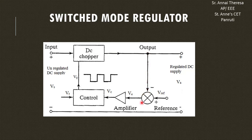This is the comparator. The output voltage — the output of the DC chopper — is compared with the reference voltage. This compared voltage is given to the amplifier, which amplifies it and passes it to the control circuit. In the control circuit, this amplified signal is compared with the reference signal, which is the sawtooth signal. The sawtooth waveform and the amplified signal are both compared, and the gate pulses are generated and given to the DC chopper.